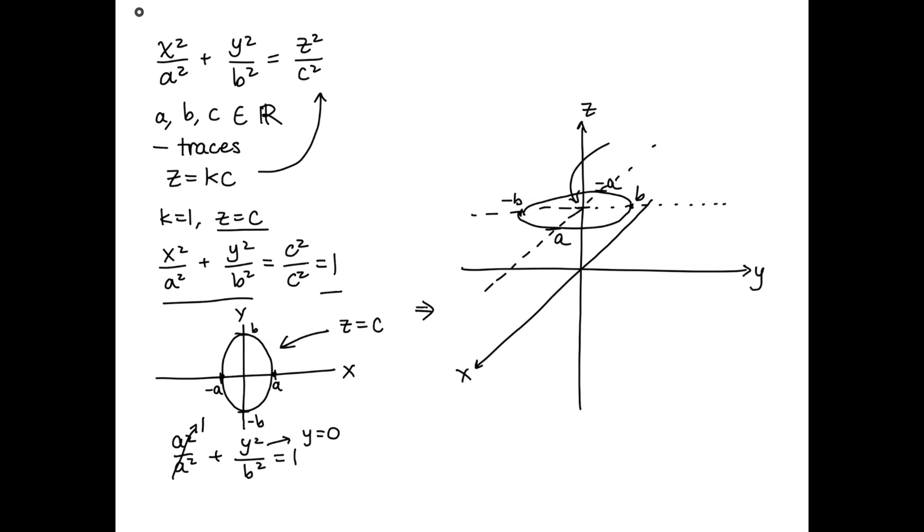And this is the ellipse. The whole plane is parallel to the xy plane and it's all at some height z is equal to c. And we can keep analyzing this function just by seeing what happens as k varies. Another thing we can do is to look at some of the other traces.